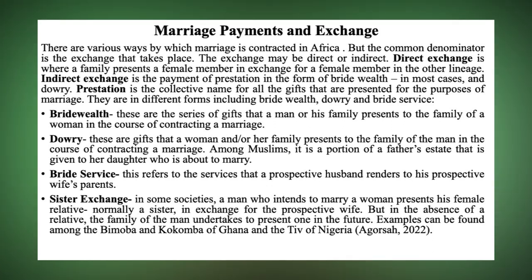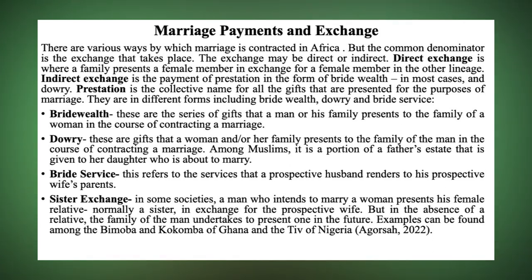So in our Ghanaian society, the list you get from the woman's family, all the items that you buy, the money you give to her parents, the akuntasikani, the money you give to her brother-in-law — all of that comes together to be referred to as bride wealth. So all the gifts that a man presents to the woman's family in the course of contracting marriage is what is referred to as bride wealth.